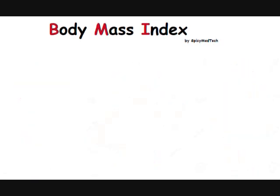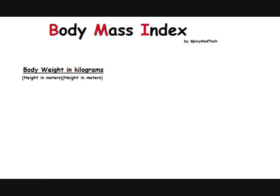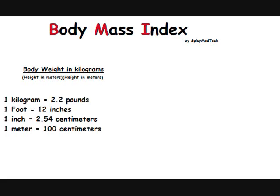To solve for the BMI, we will be using this formula. We take an individual's body weight in kilograms, then we divide it by the individual's height in square meters. If you're not used to those units, you can refer to the conversion table below.